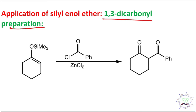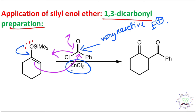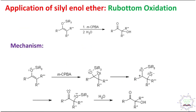Another application is the preparation of 1,3-dicarbonyl compounds. An acid chloride is taken — acid chloride is a very reactive electrophile — and ZnCl₂ acts as a Lewis acid to enhance electrophilicity. Similar to the previous strategy, the oxygen lone pair pushes and the carbon center attacks, analogous to a Claisen ester condensation. This produces a 1,3-dicarbonyl compound, also called an active methylene compound, whose alpha proton is significantly more acidic because it is doubly activated.